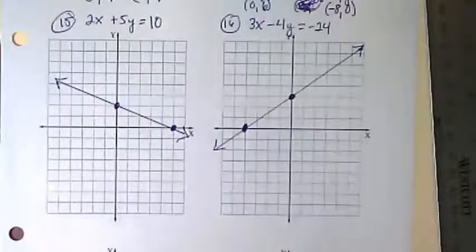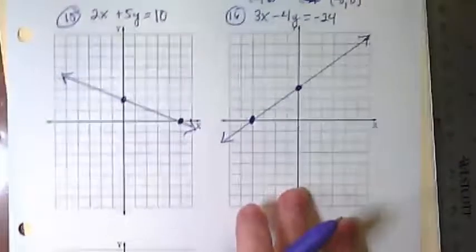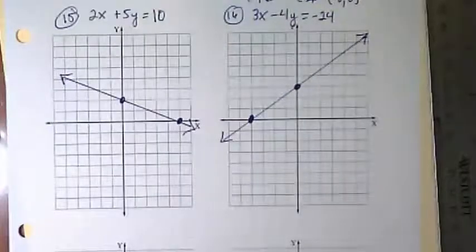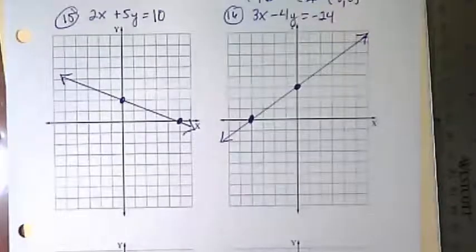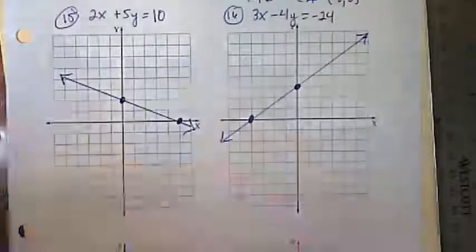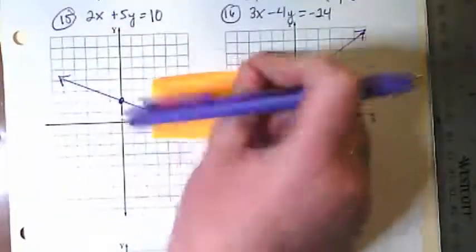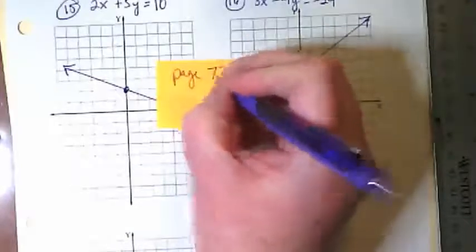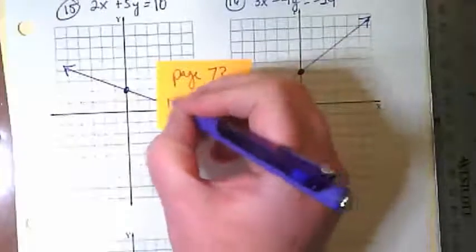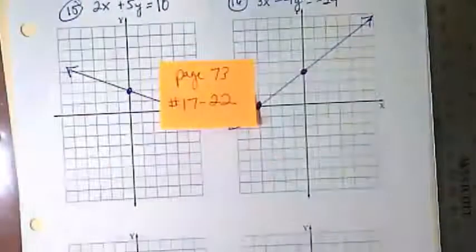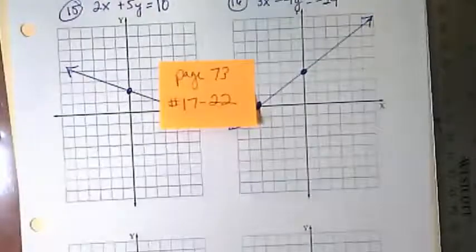So I'm looking at page 73 and I'm going to have you all continue with some practice here. There are eight graphs on this paper and we're going to do six more problems. I would like you to do number 17 through 22 and then we can come back together and check.